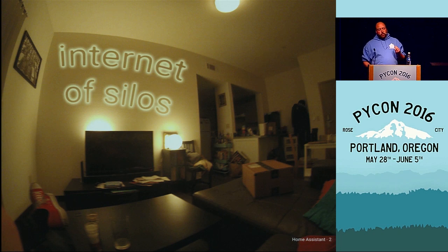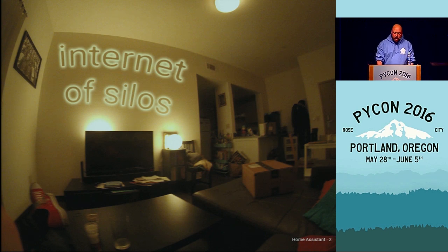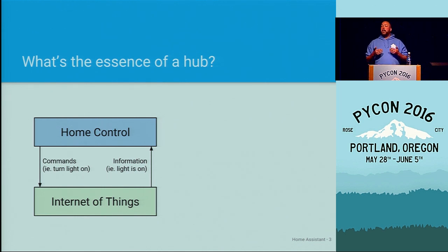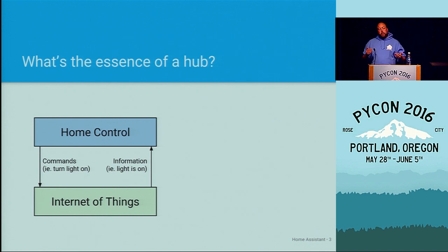To solve this, there's a thing called a hub — a home automation hub. That is what Home Assistant is. A hub bridges these devices by speaking all the different protocols that all these different devices speak. When we look at what the essence of a hub is, it's actually very simple. The first thing is it communicates with the Internet of Things, sending out commands: thermostat, set your temperature; light, turn on; media player, start playing a movie.